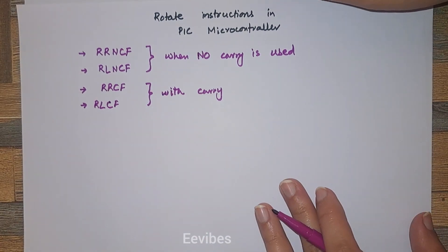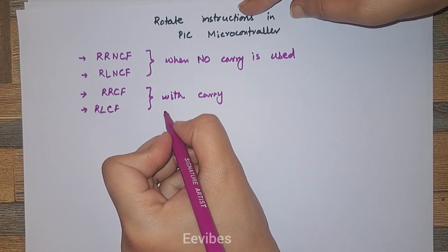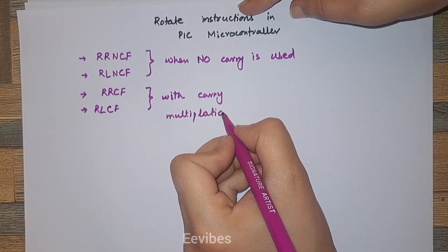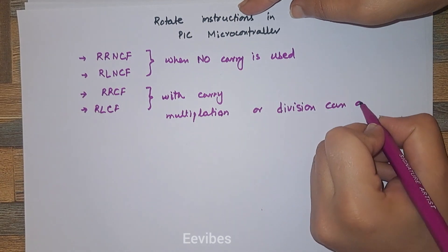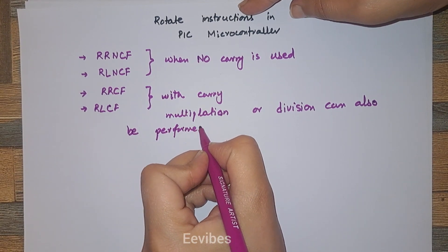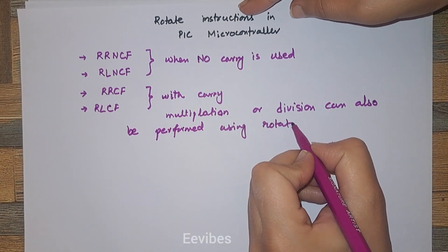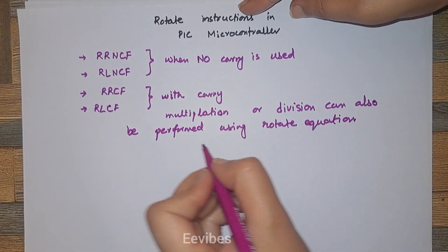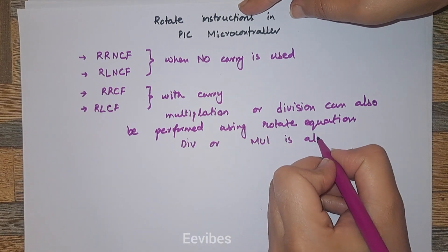One thing you must always remember: rotate instructions are used in the microcontroller for performing multiplication or division. Multiplication or division can also be performed using these rotate instructions. The only difference is that division or multiplication is always by the factor of two.